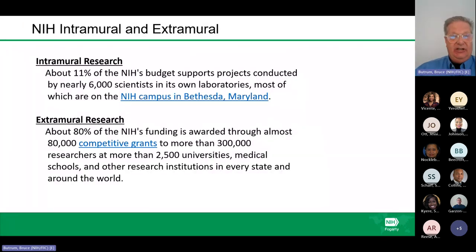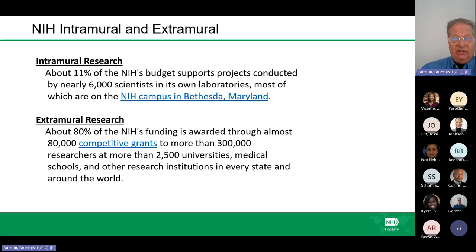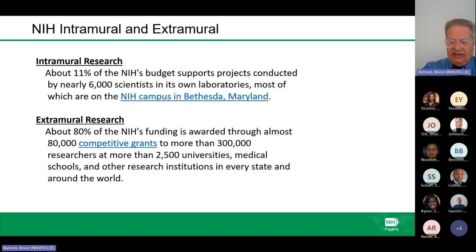Intramural research makes up about 11% of the NIH budget, conducted by nearly 6,000 scientists in its own laboratories at NIH and other sites. Extramural funding is about 80% of NIH funding, awarded through about 80,000 competitive grants to more than 300,000 researchers at more than 2,500 universities, medical schools, and research institutions in every state and around the world.